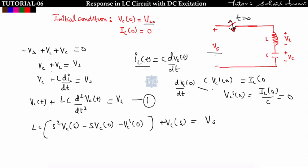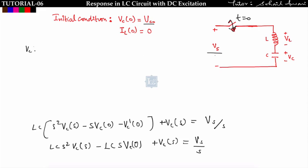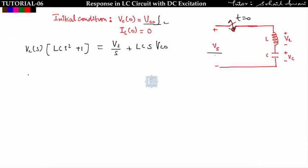So VC'(0) is d(VC(0))/dt equals zero. Rearranging: LC·s²·VC(s) minus LC·s·VC(0) plus VC(s) equals Vs/s. I can write VC(s) into [LC·s² + 1] equals Vs/s plus LC·s·VCₒ, where VC(0) equals VCₒ, the initial capacitor voltage.